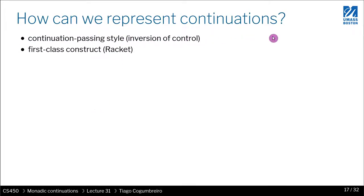So how can we represent continuations? We're going to study two ways of doing it. The first one is via continuation passing style, which is a form of inversion of control. We'll see what that means. And after that, we're going to see a first-class construct in Racket, which is known as call-cc, call with continuation.